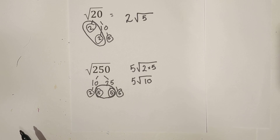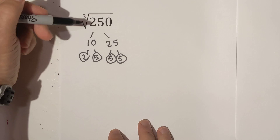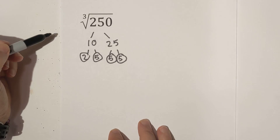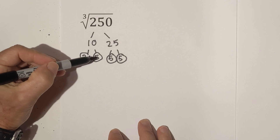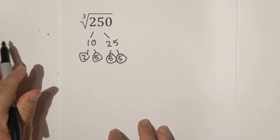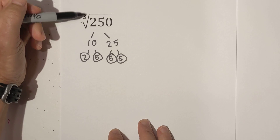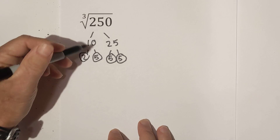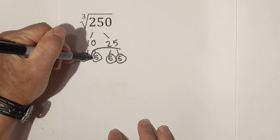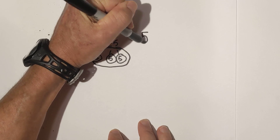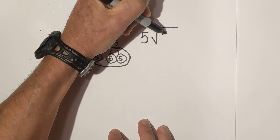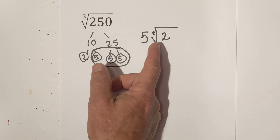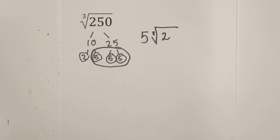Now let's move on to cube roots. We have the cube root of 250 and we can use the same factor tree: 10 times 25 is 250, then 2 times 5 is 10, and 5 times 5 is 25 — down to prime numbers. With a cube root we pull out triplets instead of pairs. We have three 5s, so 5 goes on the outside, and all we have left is 2. So it is 5 cube root 2.